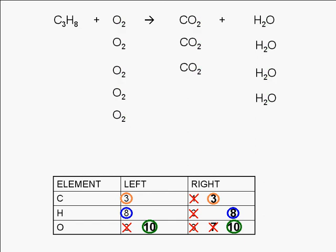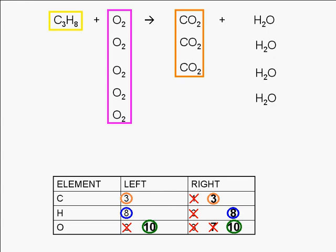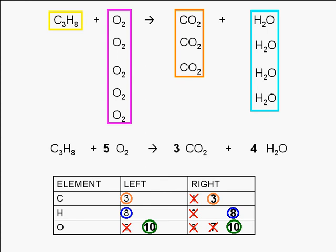So the balanced chemical equation has one C3H8, five O2s, three CO2s, and four H2Os. We can summarize everything by writing the chemical equation like this: we put a coefficient of 5 in front of O2, a coefficient of 3 in front of CO2, and a coefficient of 4 in front of H2O. We don't need to put a coefficient in front of C3H8. If no coefficient is written, it is implied to be 1.